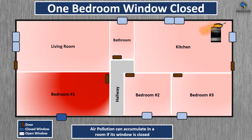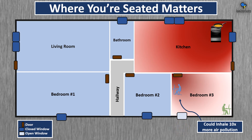If most windows in your home are open but one bedroom has the windows closed, that bedroom could have significantly more air pollution versus the other rooms. Where you are seated matters — if someone's cooking and your window is open, kitchen air pollution might be drawn into your room. If you're near the door you can inhale 10x more air pollution. Positioning your desk in a far corner would mean inhaling much less air pollution.